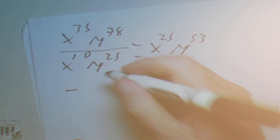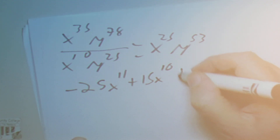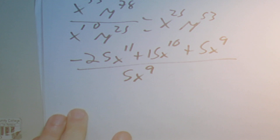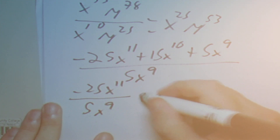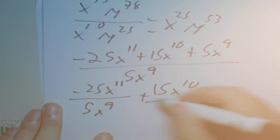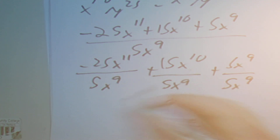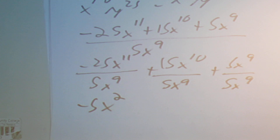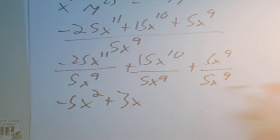Then we divide a polynomial by a monomial. Let's say it's negative 25x to the 11 plus 15x to the 10 plus 5x to the 9, all over 5x to the 9. Break this into three separate divisions. Negative 25 over 5 is negative 5, and x to the 11 divided by x to the 9 is x squared. Plus 15 over 5 is 3, and x to the 10 minus 9 is just x. And 5x to the 9 divided by 5x to the 9 is plus 1. So the answer is negative 5x squared plus 3x plus 1.